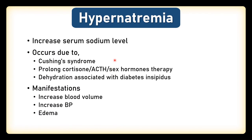Hypernatremia is the condition where there is an increase in the serum sodium level. It occurs due to Cushing syndrome, prolonged cortisone, adrenocorticotropic hormone, sex hormones therapy, and dehydration associated with diabetes insipidus. The manifestations include increased blood volume, increased blood pressure, and edema.